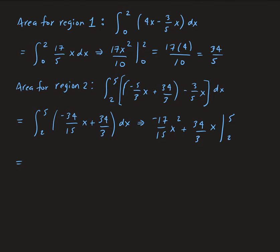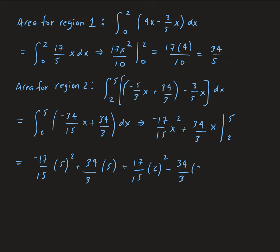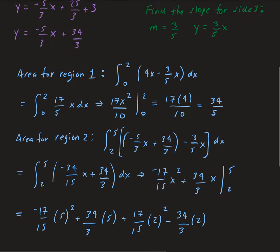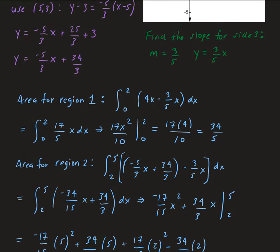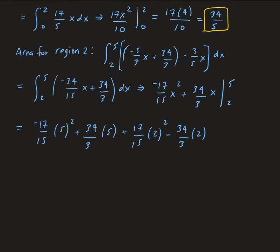Evaluating from 2 to 5: we get −17/15 times 5² plus 34/3 times 5, then minus the quantity of positive 17/15 times 2² minus 34/3 times 2. Combining this with region 1, which gave us 34/5, we add both regions together to get the total area.